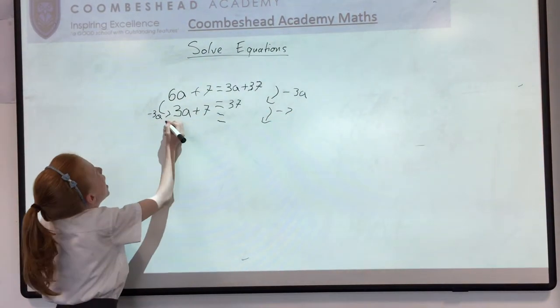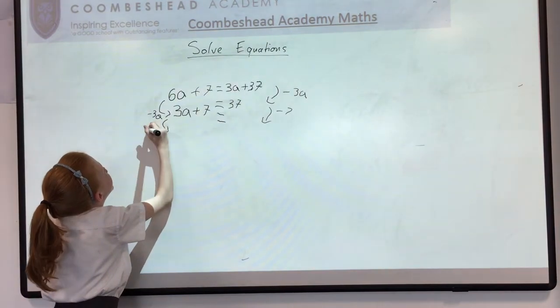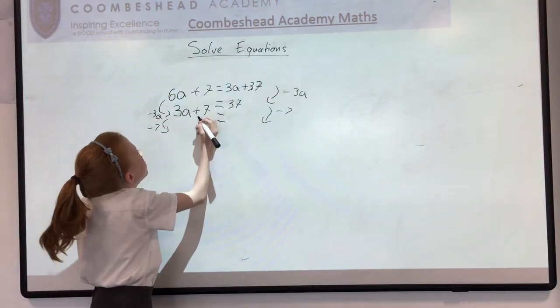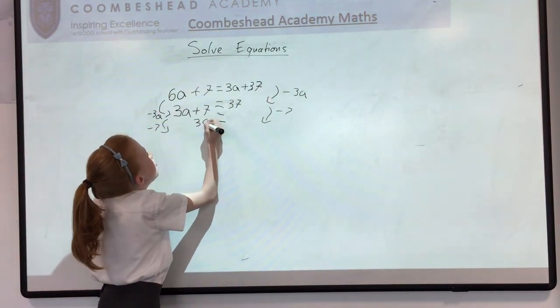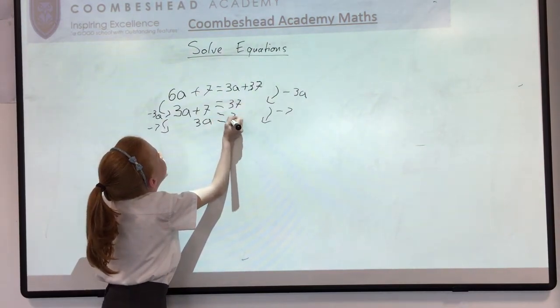So take away 7, and take away 7. So that leaves us with 3a equals 30.